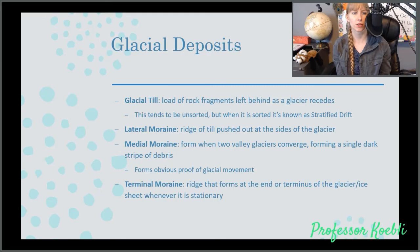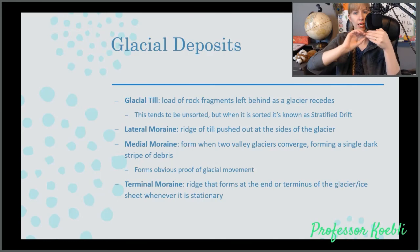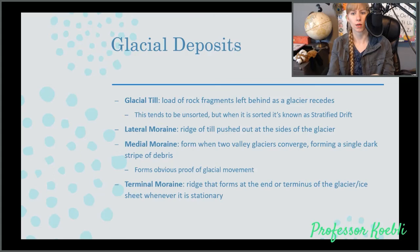A lateral moraine, a medial moraine, and a terminal moraine are all parts of till that gets left behind by a glacier. A lateral moraine is the ridge of till pushed out at the sides of the glacier, kind of like it smooshes it out the bottom. A medial moraine forms when two valley glaciers converge, forming a single dark stripe of debris, which is an obvious proof of glacial movement. Because they would not have formed otherwise if they did not come together. A terminal moraine is a ridge that forms at the end or terminus of a glacier or ice sheet whenever it is stationary.